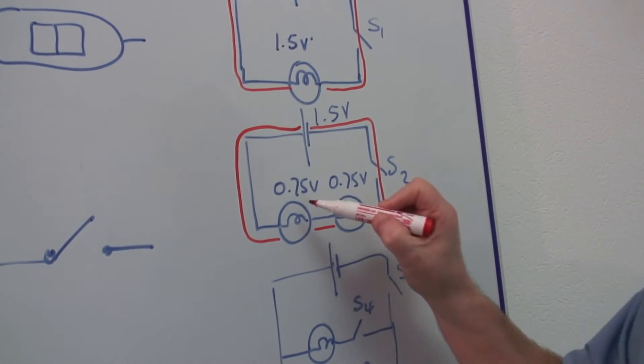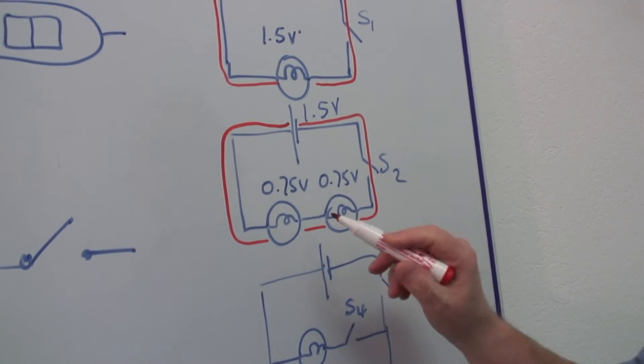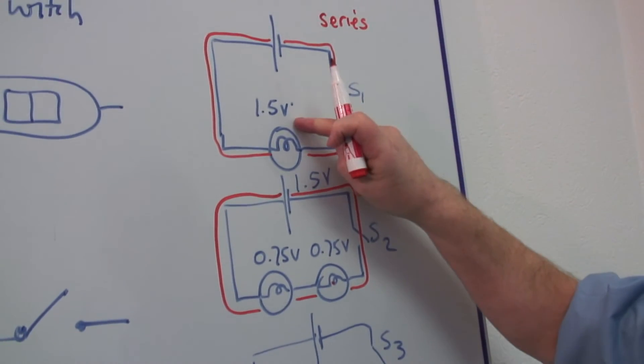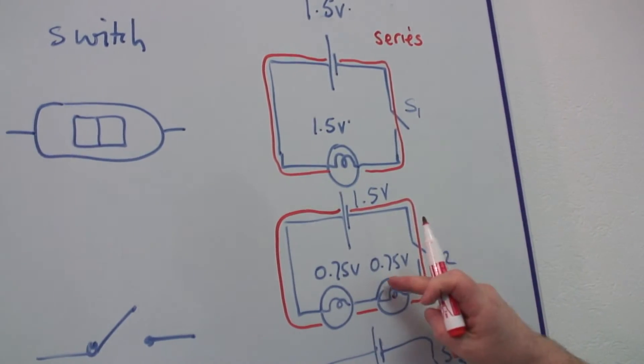So if I use 1.5 volt bulbs for each of these, these would be dimmer than in this case. This would be the correct brightness, these would be much dimmer.